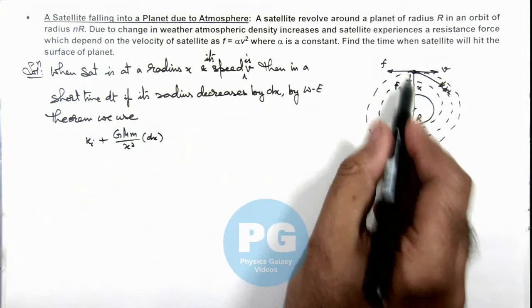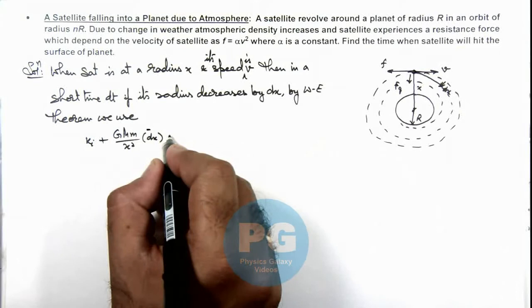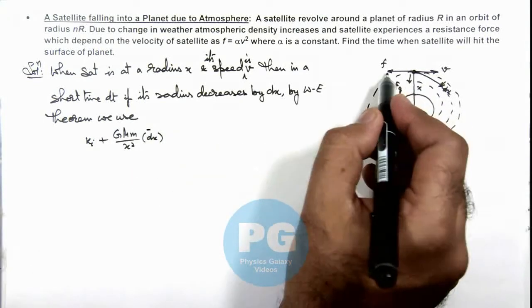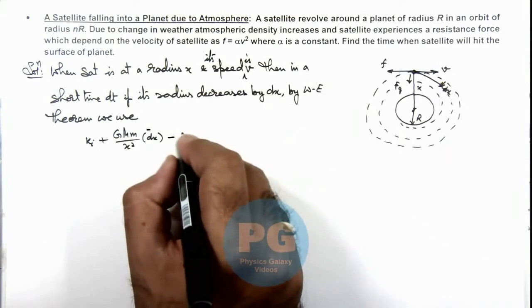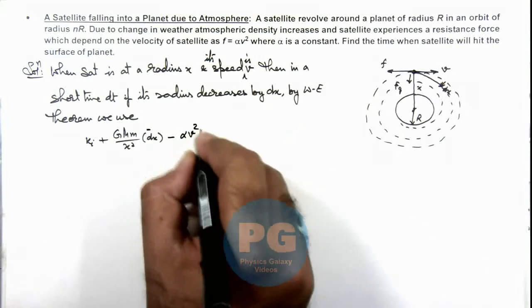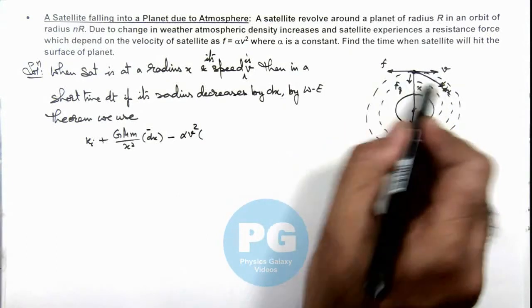Plus the work done by friction force which is also negative, so I can write minus friction force on it is α v² multiplied by the distance traversed by the satellite in the direction of friction.